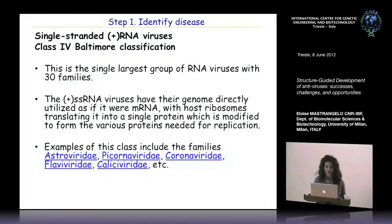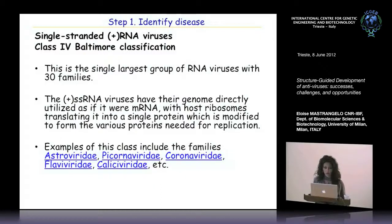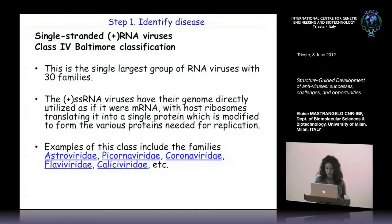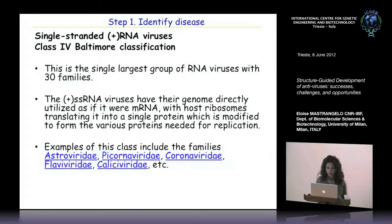The first step is the identification of the disease. In our lab we decided to work on single-strand positive-sense RNA viruses, which belong to class 4 of the Baltimore classification. This is the largest group of RNA viruses, comprising more than 30 families. Their genome is directly used by the ribosome to be translated into a single polyprotein, which is modified to give several proteins necessary for viral replication.